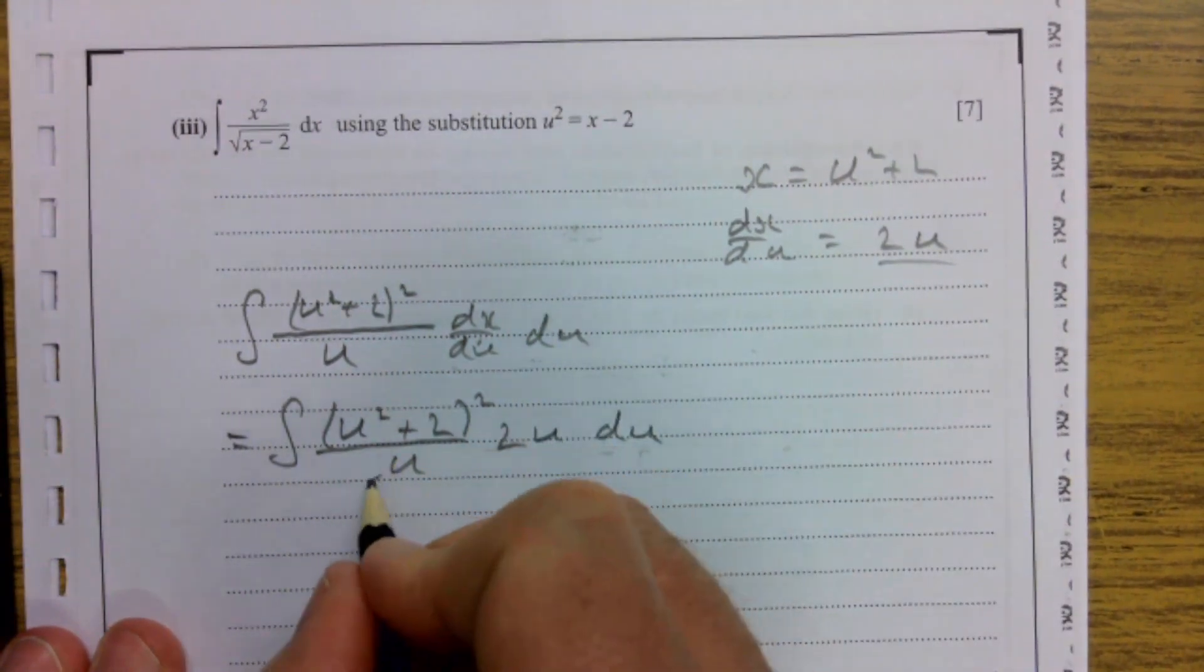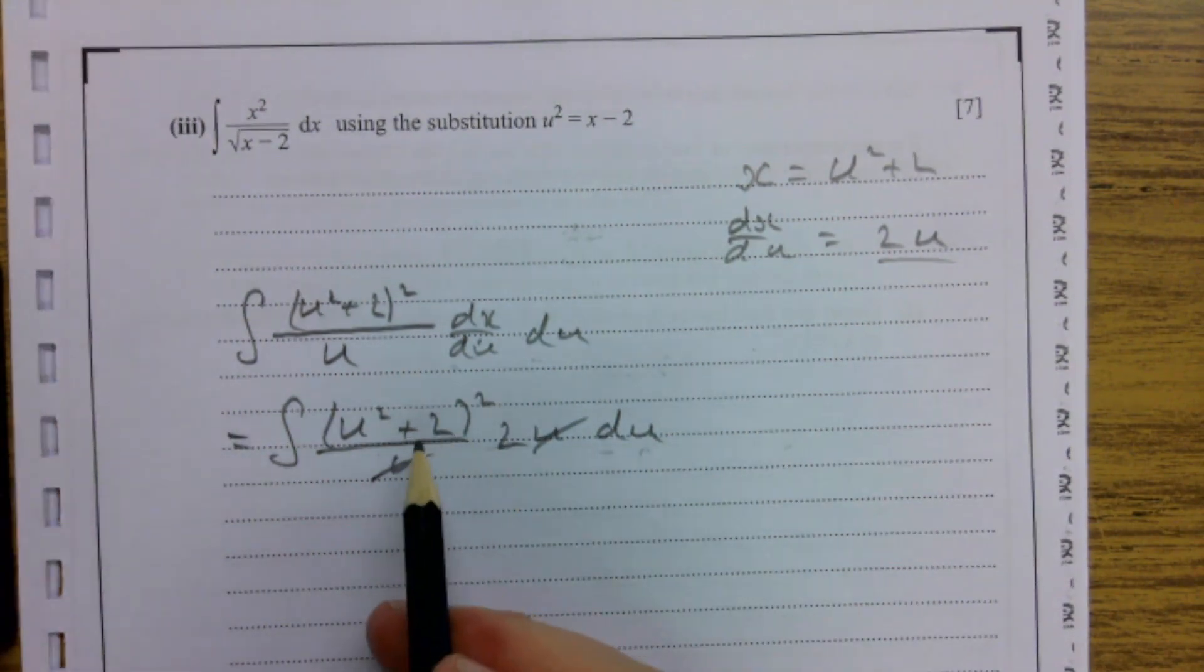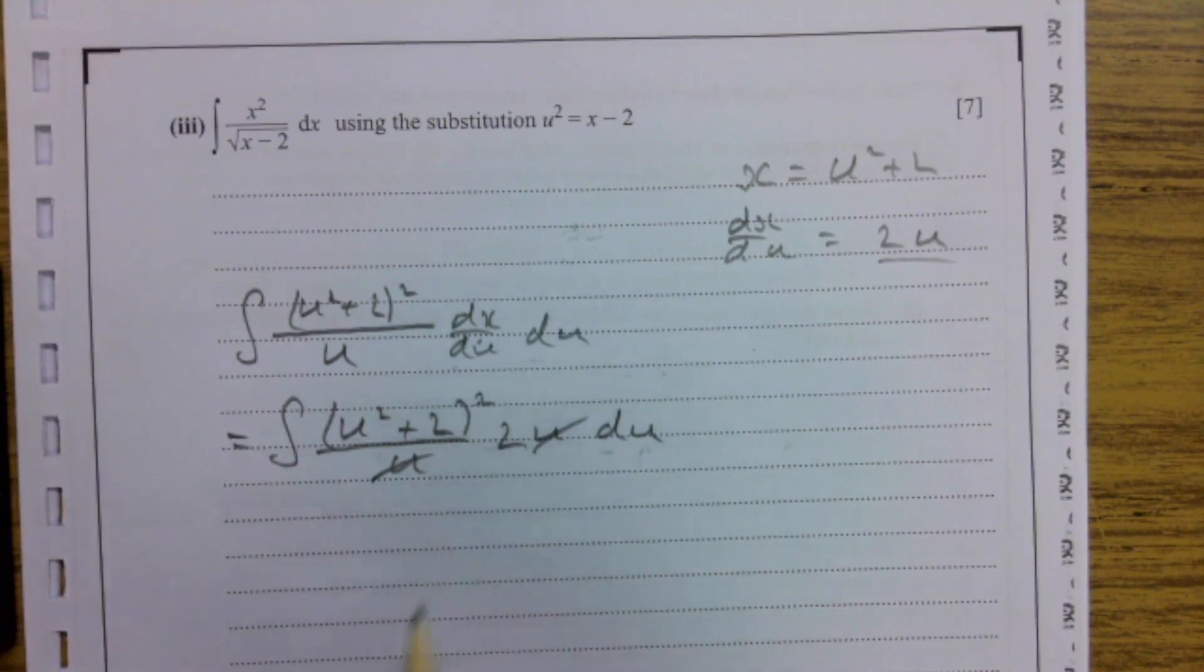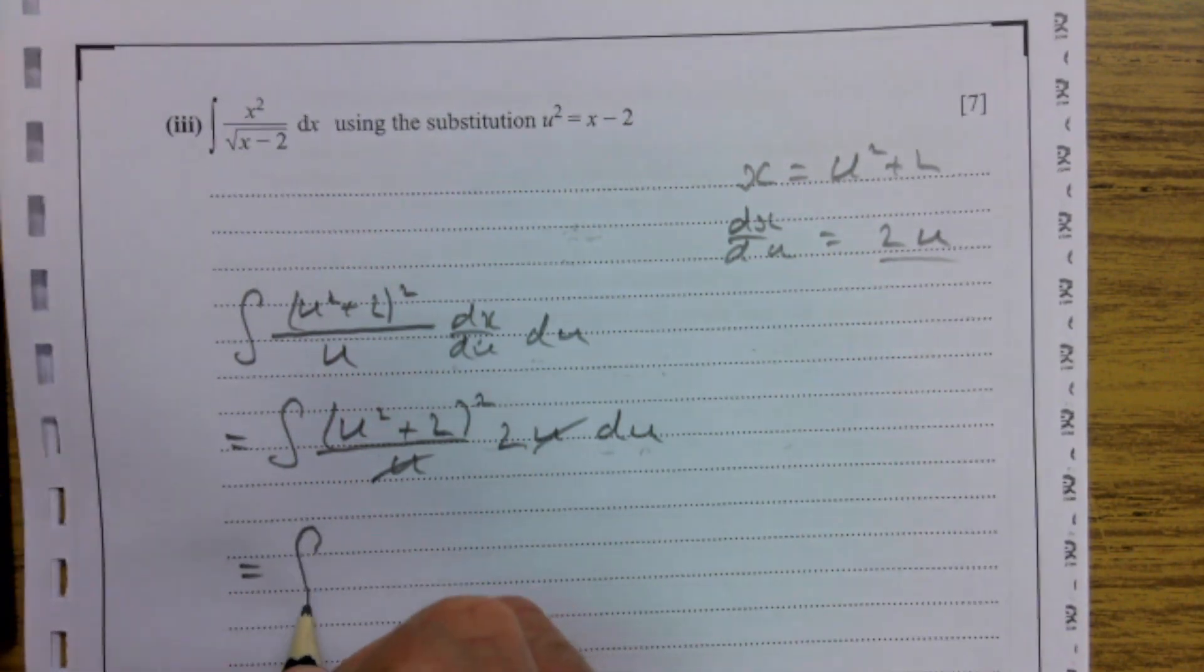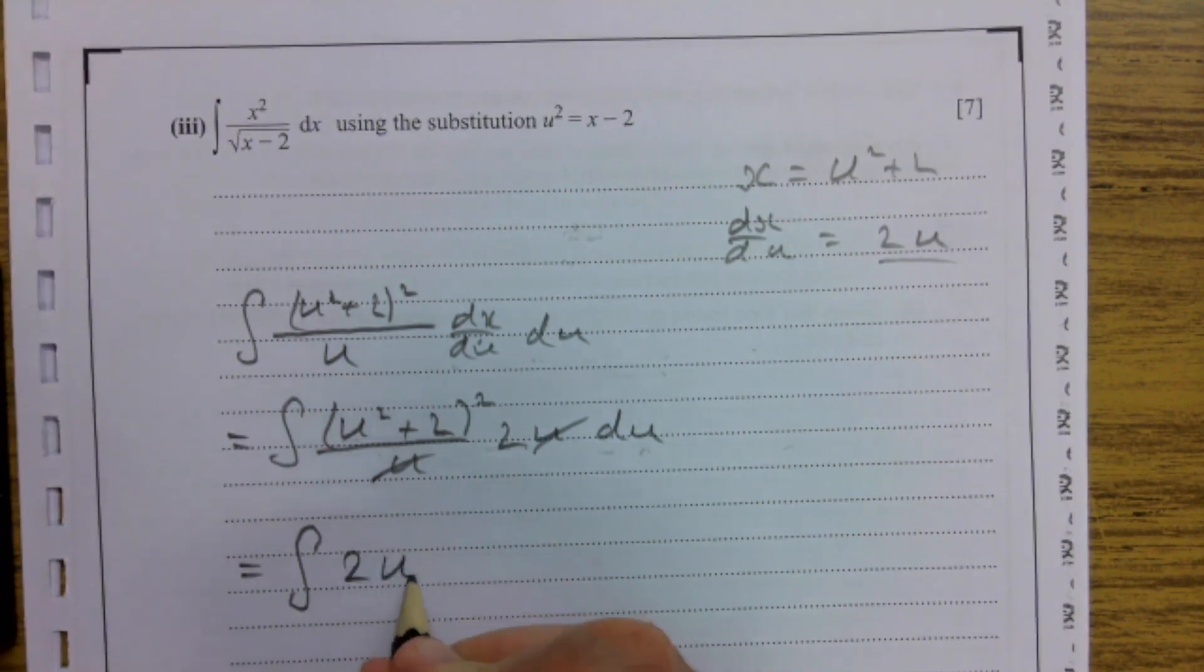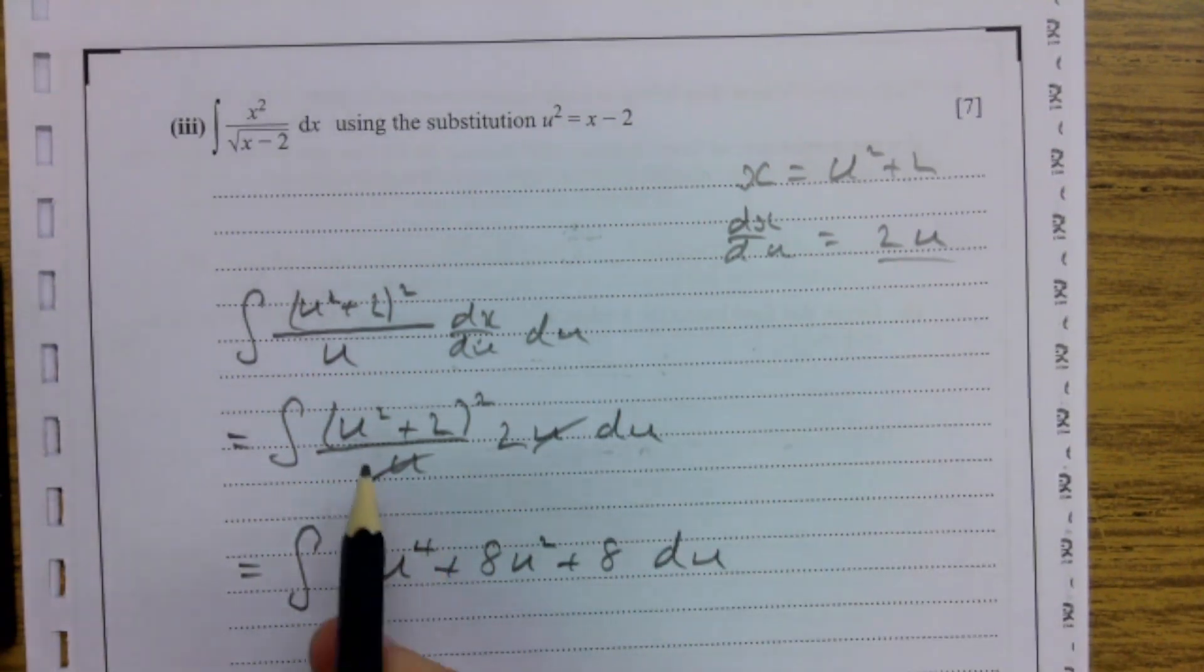Those u's cancel and make our life a little bit easier. Effectively what we're going to do is multiply this bracket here and then times everything by 2. I'm going to let you just do that, and you can take my word for it. At the end of it, 2u to the power of 4 plus 8u squared plus 8 du.